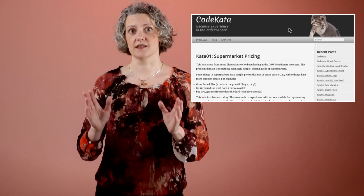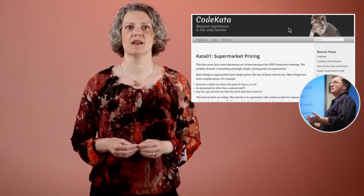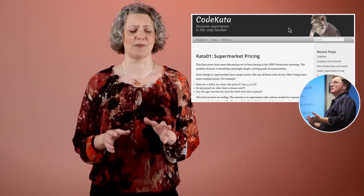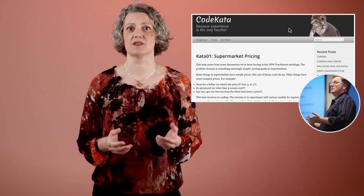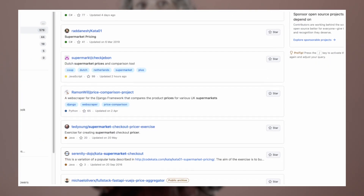The original exercise, Supermarket Pricing by Pragmatic Dave Thomas, was presented back in around 2003. So many, many people have had a go at this over the years. If you search for Supermarket Pricing Kata on GitHub, there are hundreds of hits. I liked this problem so much I created a Refactoring version of it.